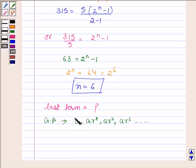Now here we have a = 5 and r, the common ratio, is given to us as 2, and we have to find the last term, and that will be the 6th term.